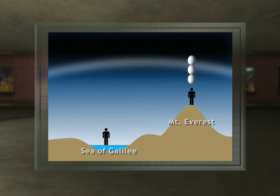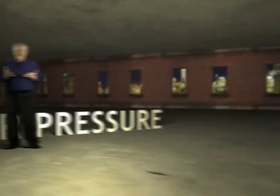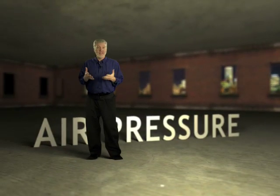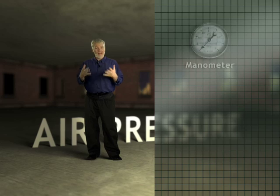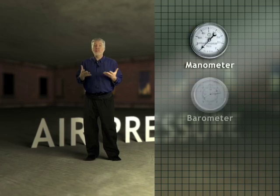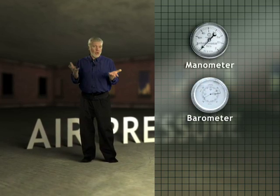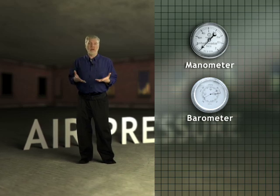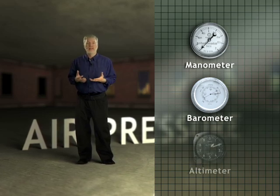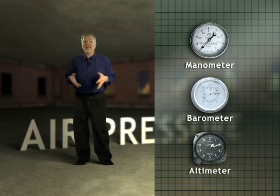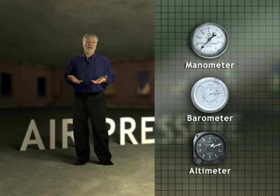The closer to the center of the Earth, as in the Sea of Galilee, the more eggs above you and the greater the pressure. We can measure the air pressure using different instruments. We have manometers and barometers. The barometers can be mercury barometers or aneroid barometers. An altimeter is basically an aneroid barometer.